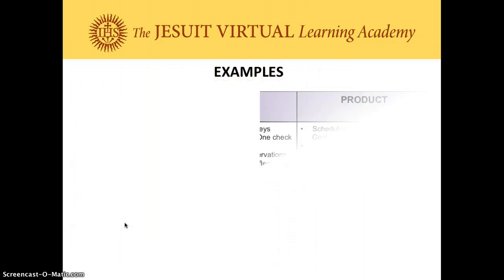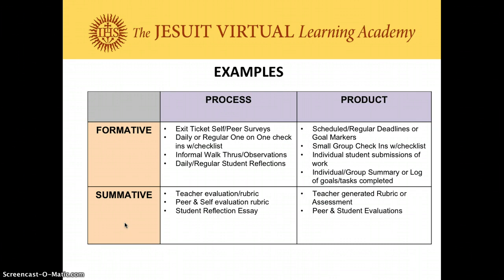For formative assessment of the process, you could include exit tickets and self/peer surveys, daily or regular one-on-one check-ins, informal walkthroughs and observations, or daily student reflections. These don't have to be graded, but if students need an incentive, provide a small number of points — five to ten points, or five to ten percent of the grade — as they complete these formative assessments. We'll take a look at some peer surveys and exit tickets you could implement as part of your formative assessment strategy for the group work process.